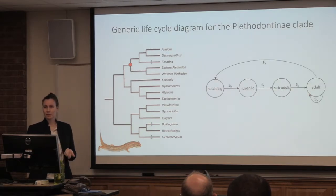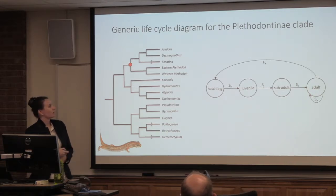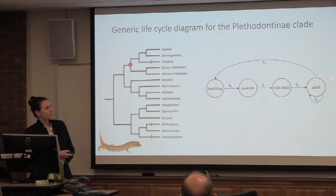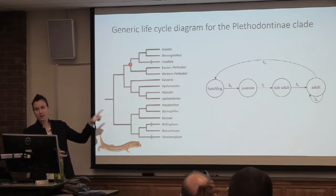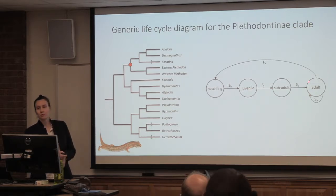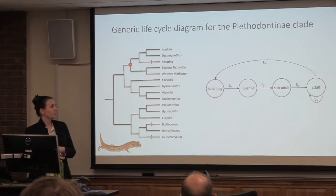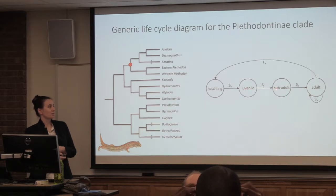This is a generic life cycle diagram for the Plethodontinae clade. Basically you have animals moving through life stages. Adults survive but stay in the same life stage — a cyclic process of survival. Additionally they produce offspring via a fecundity term that produces hatchlings. The fecundity term includes clutch size, clutch frequency, and hatch rate, which is an egg survival value. Then hatchlings survive to become juveniles, juveniles to sub-adults, and sub-adults to adults.